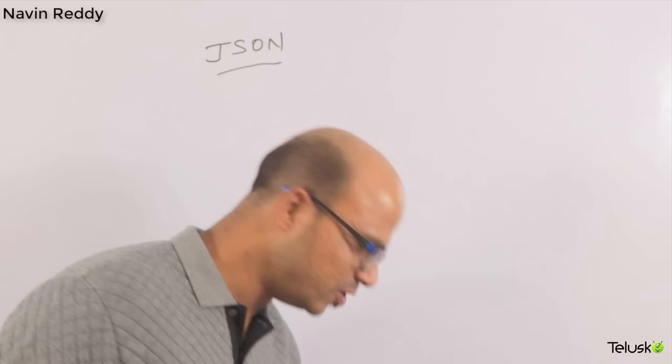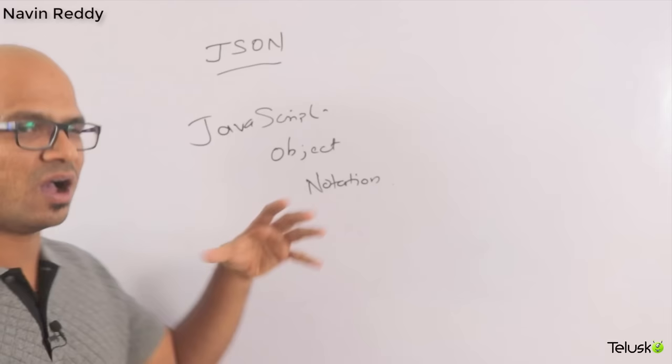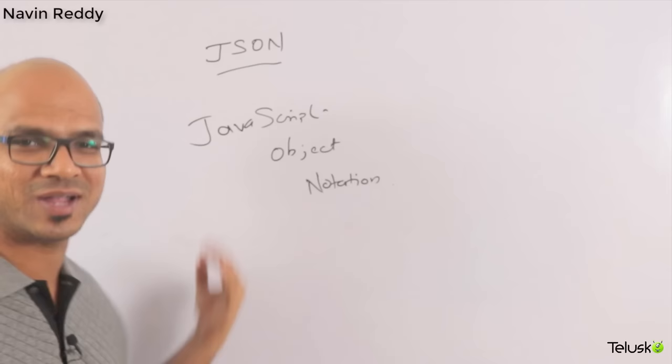Welcome back. I am now being ready from Thaisco Learnings and let's get started. JSON simply means JavaScript Object Notation. When you talk about JSON, it is simply a format in which you can transfer data from client to server and from server to client.